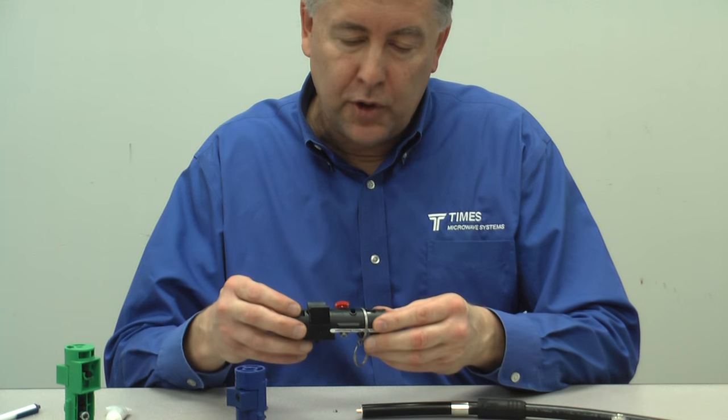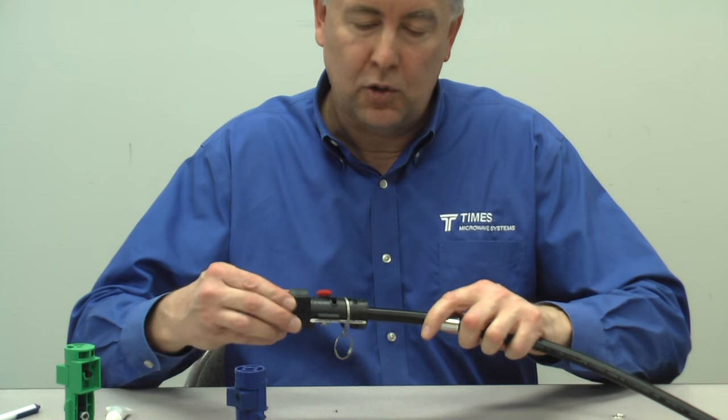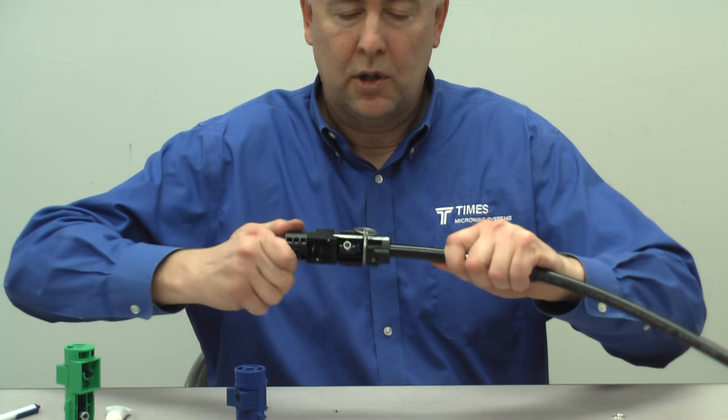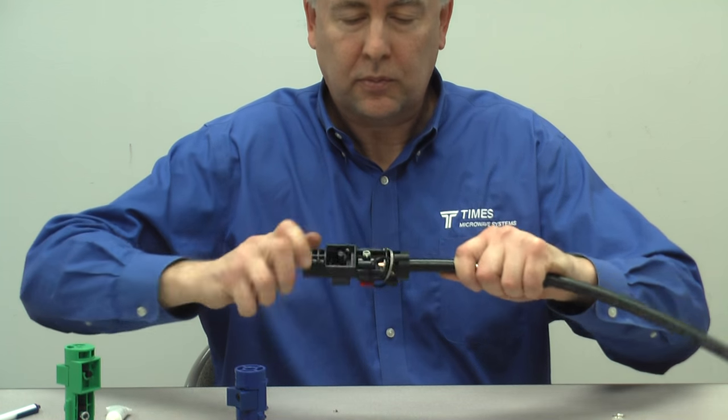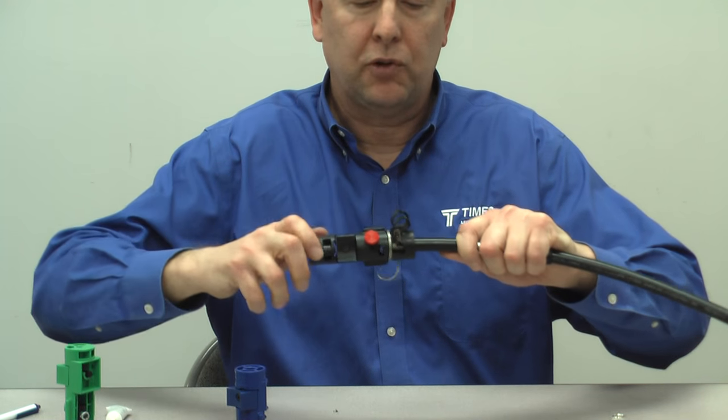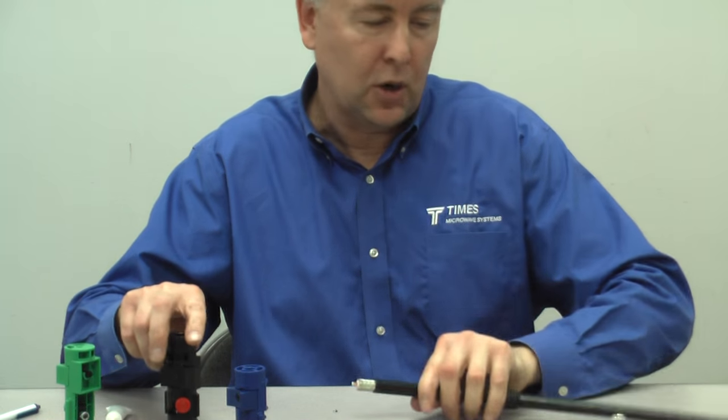Now you want to make sure it's set for crimp. Place that over the cable, the tool. Just start spinning it and let the tool do the work. Just spin it until it spins freely like so. You're all set to go at that point.